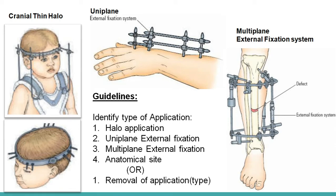To assign accurate codes, the coder needs to identify what type of device the physician applied to the patient's defected area or fracture site — whether it is halo application, uniplane external fixation, or multiplane external fixation. The coder also needs to identify the anatomical site where the device is fixed, and whether the physician fixed wires, pins, or any other frames.